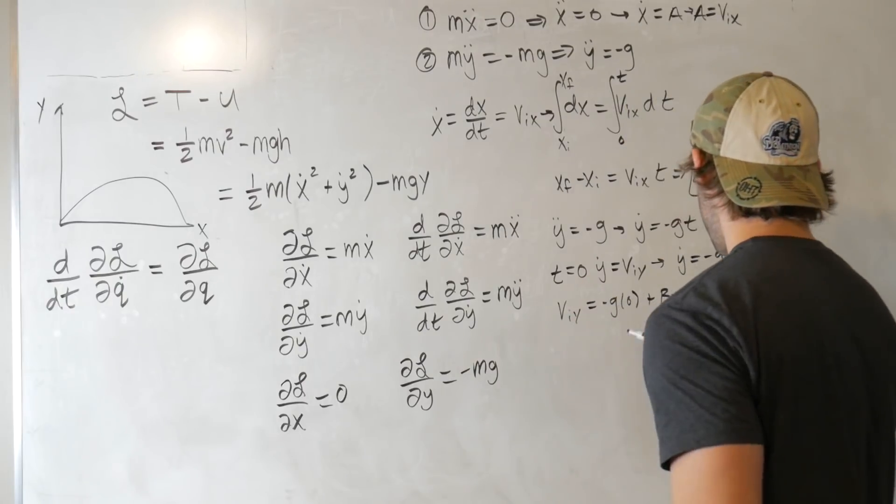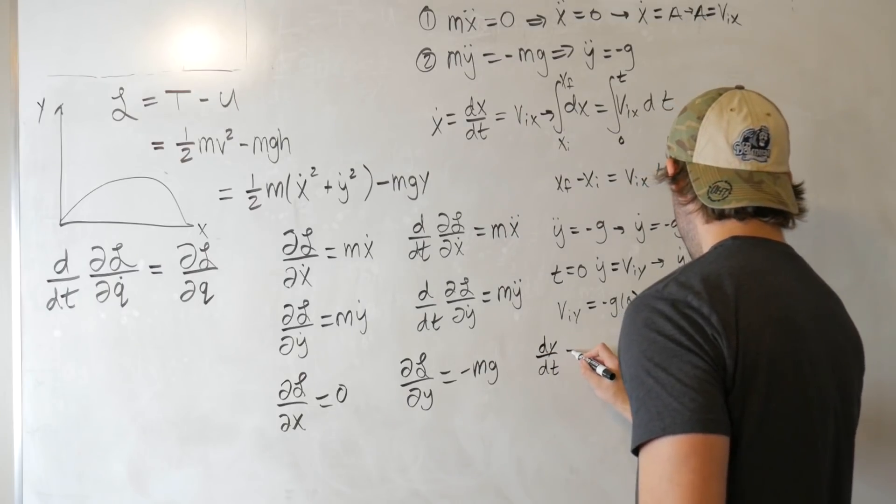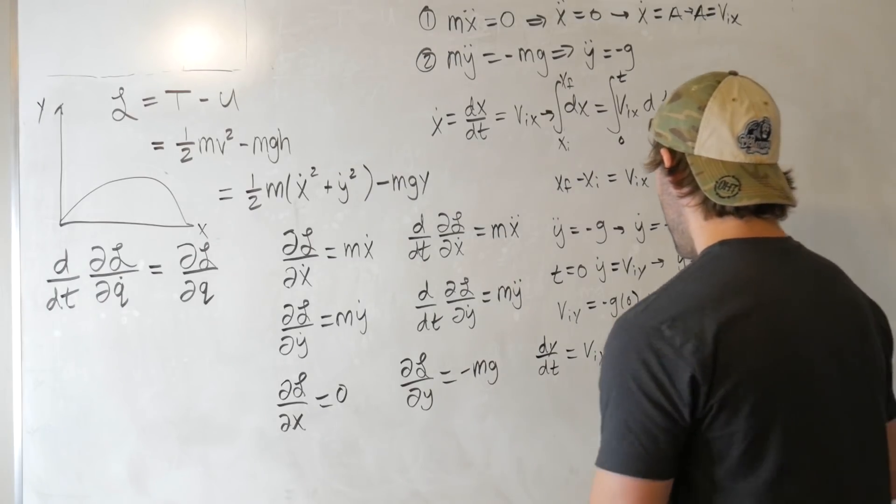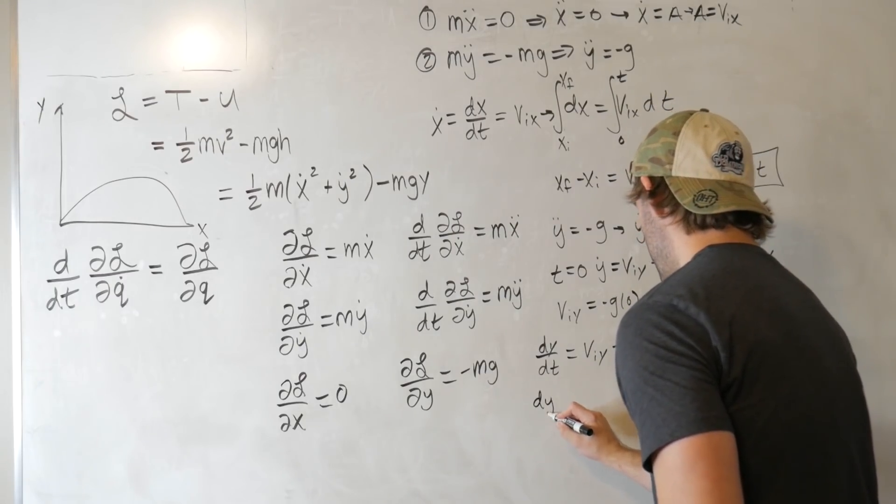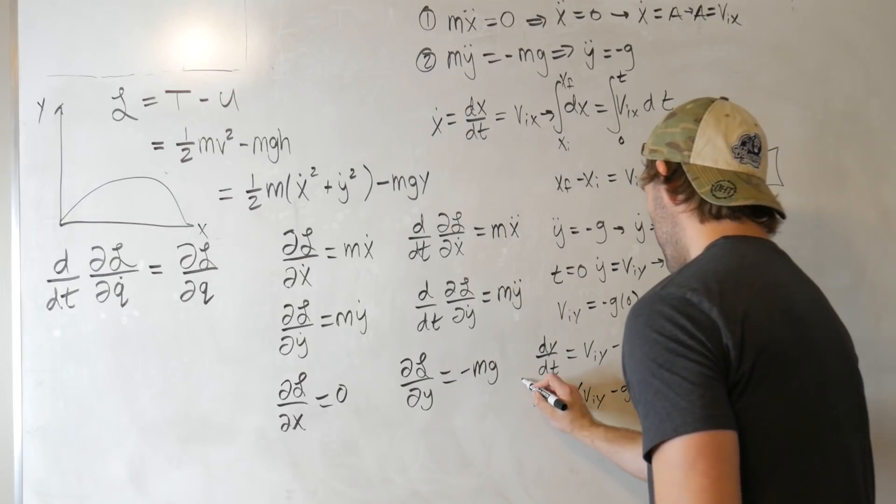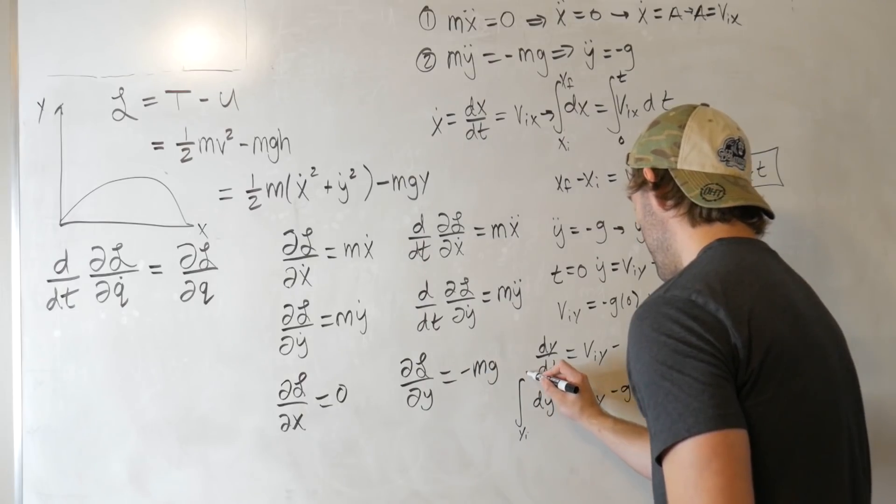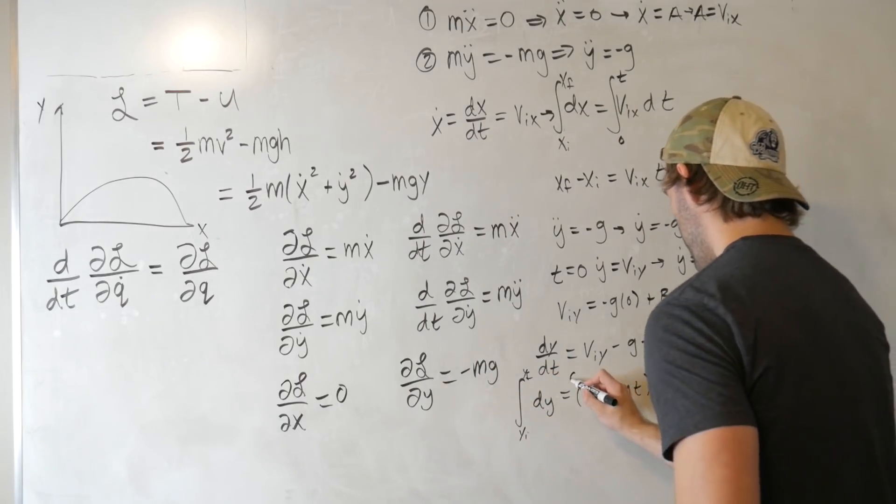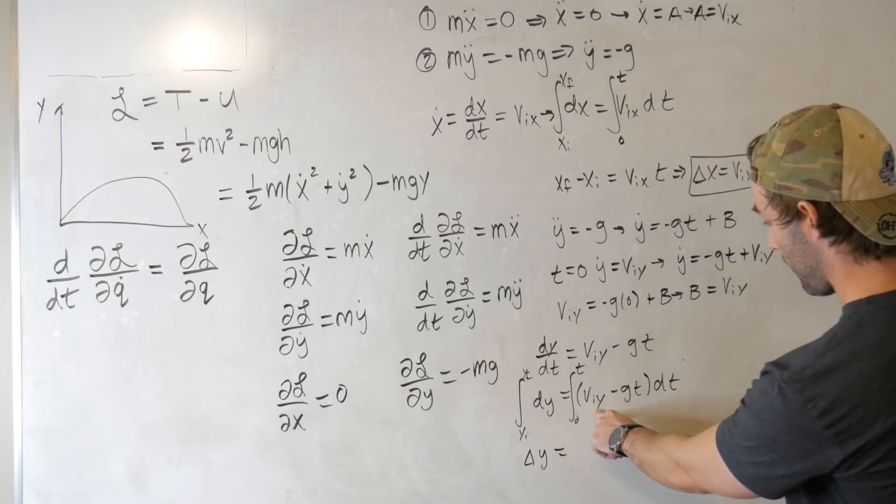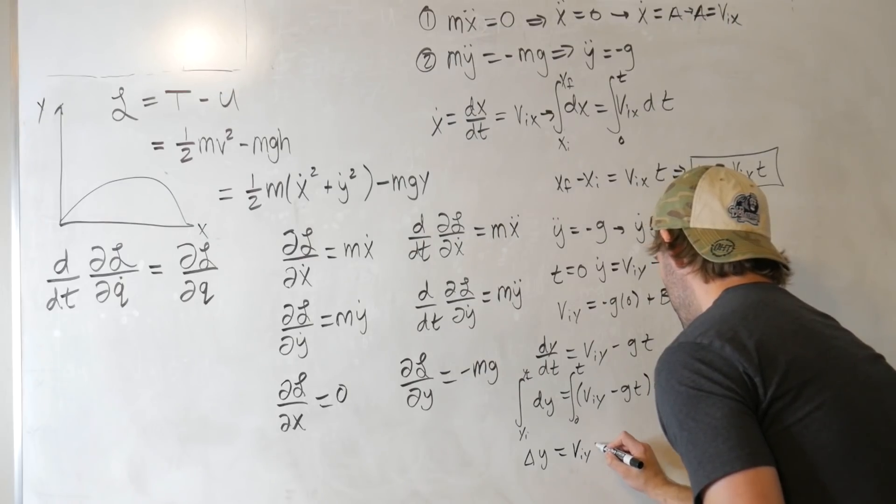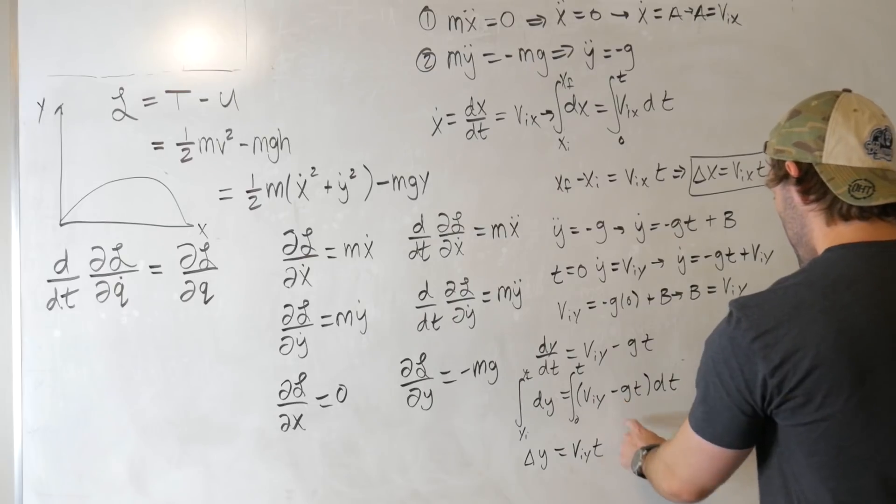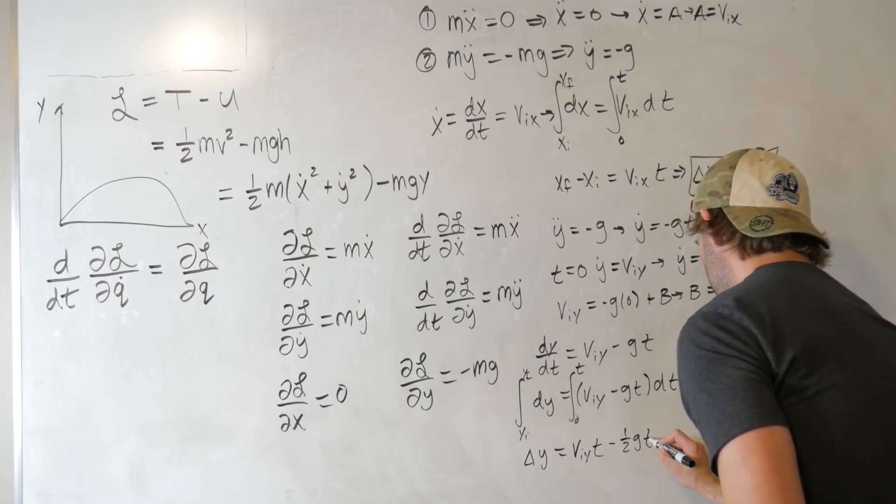And then we're going to integrate both sides again. So this is dy/dt is equal to viy minus gt. Let's multiply both sides by dt, which gives us dy is equal to viy minus gt dt. Integrate both sides from yi to yf, and this can be integrated from zero to t again. And that's going to tell us that delta y is equal to viy t minus one-half gt squared.